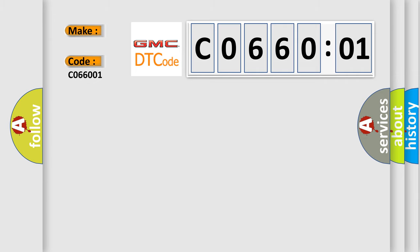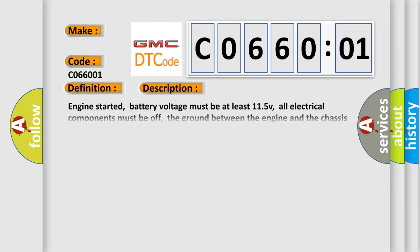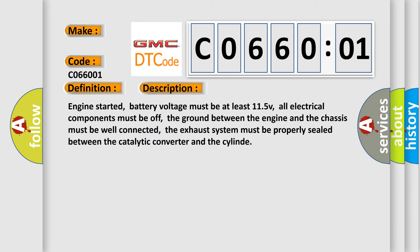The basic definition is Linear O2 sensor or pump current short to ground. And now this is a short description of this DTC code: Engine started, battery voltage must be at least 11.5V, all electrical components must be off, the ground between the engine and the chassis must be well connected, the exhaust system must be properly sealed between the catalytic converter and the cylinder.